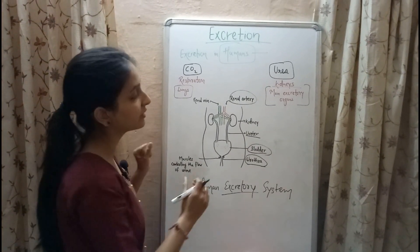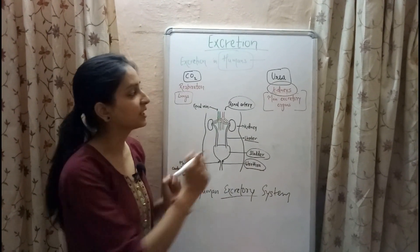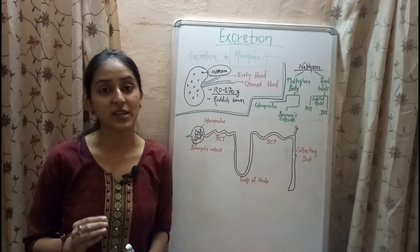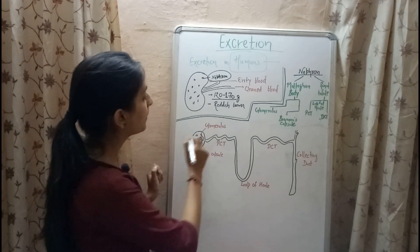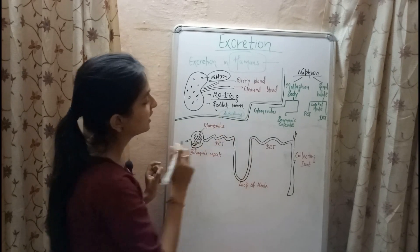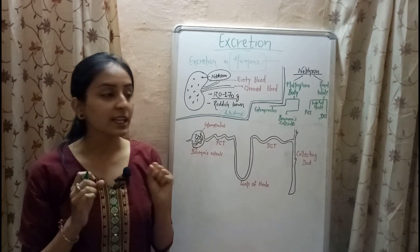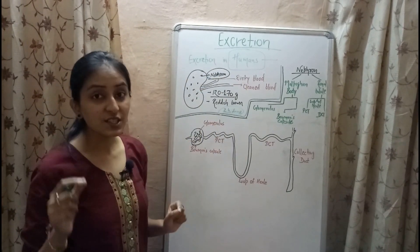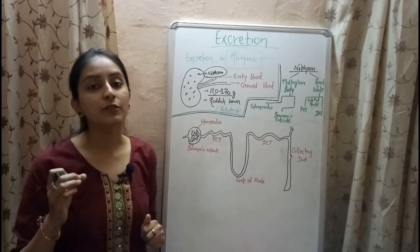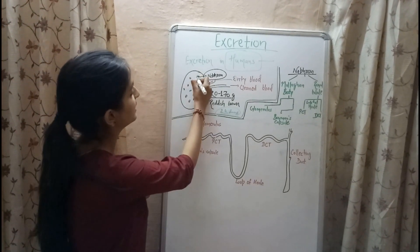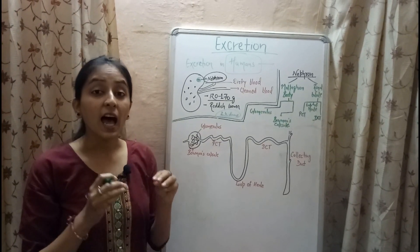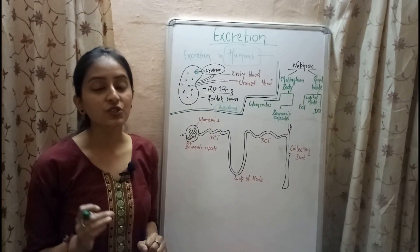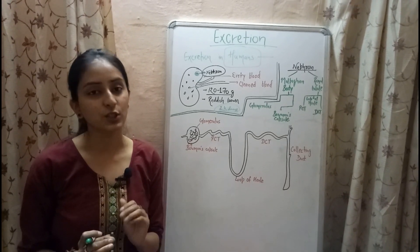Now let's study the kidney and its functional units called nephrons in detail. Kidneys are bean-shaped structures present towards our back, just above the waist. We have a pair of kidneys that are reddish-brown in color, weighing about 120 to 170 grams. The functional units of the kidney are nephrons, and each kidney consists of 1 million nephrons. The kidneys receive dirty blood from the renal artery; nephrons filter it, and clean blood is passed back into the bloodstream via the renal vein.